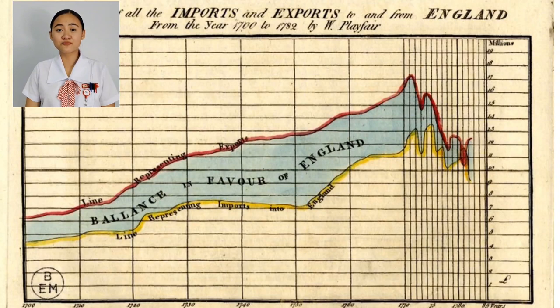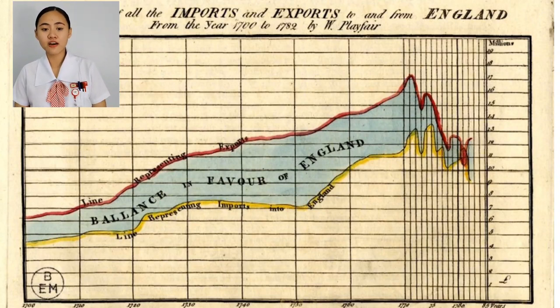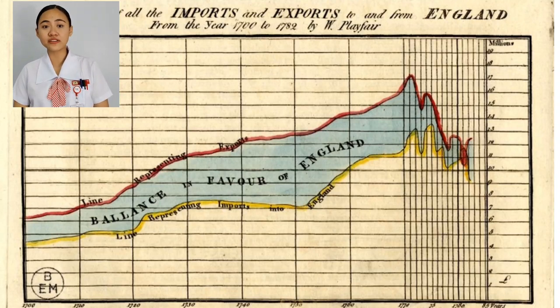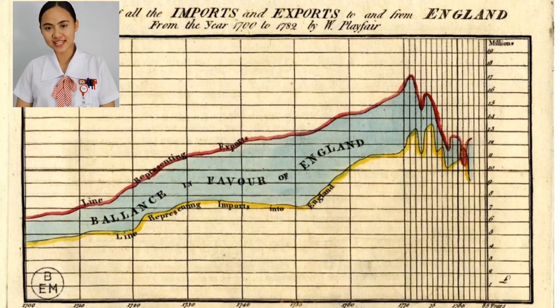Over time, the broken line graph became a widely adopted method for visualizing trends and relationships in various fields such as economics, science, and social sciences.